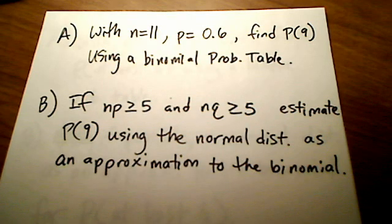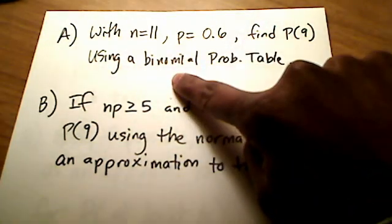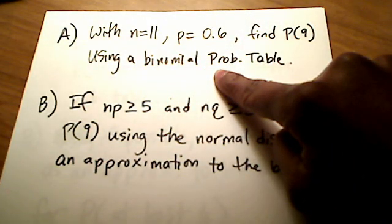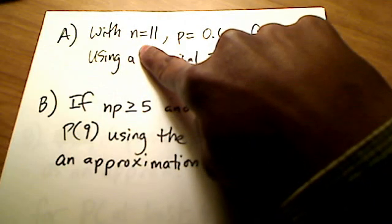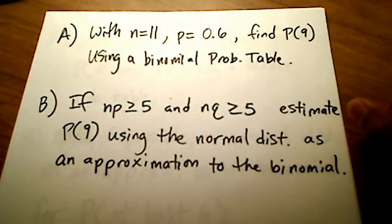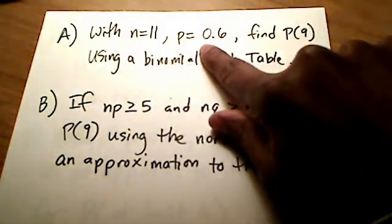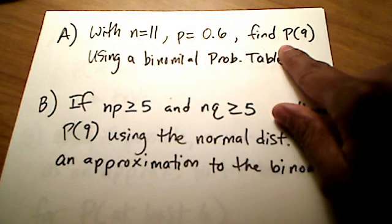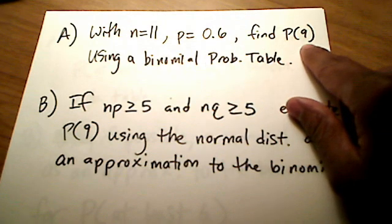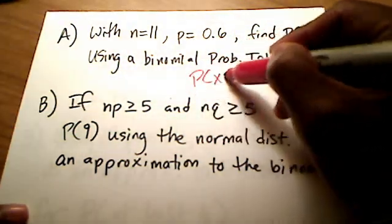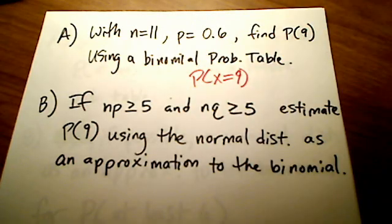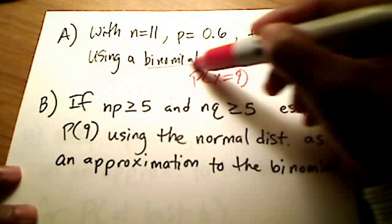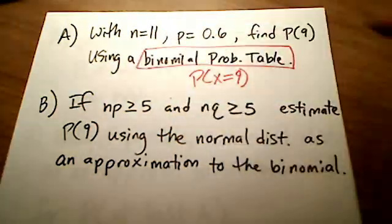This is an example where they give us some information from a binomial probability distribution. We have n, the number of independent trials, equal to 11, and the probability of success is 0.6. They want us to find exactly the probability that x is equal to 9. For part A, they want us to use the binomial probability table, which is probably found in the back of your book, to find this value.